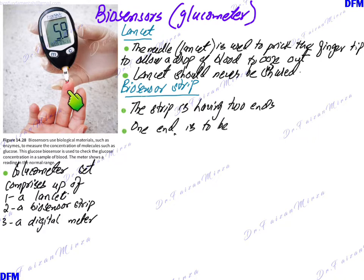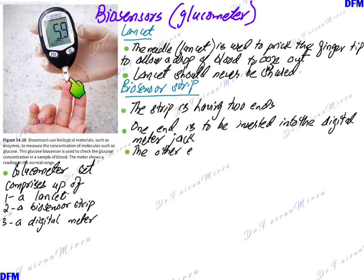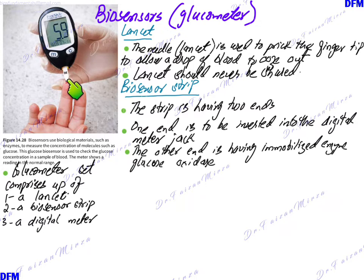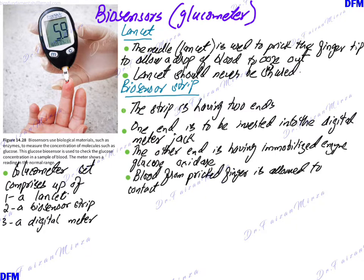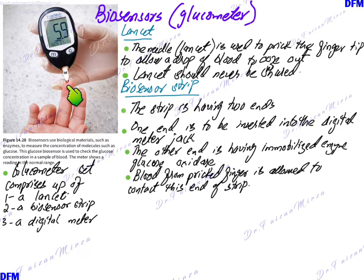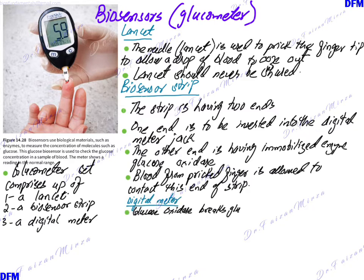The biosensor strip has two ends: one end is inserted into the jack of the meter, and the opposite end has the immobilized enzyme — here just one enzyme, glucose oxidase. The blood from the pricked finger is then brought into contact with the enzyme end of the strip. The moment the strip is inserted into the jack, the meter turns on, and you allow the blood to come in contact with the strip.